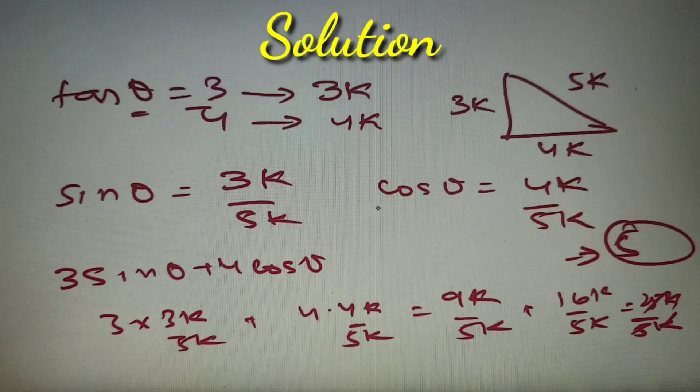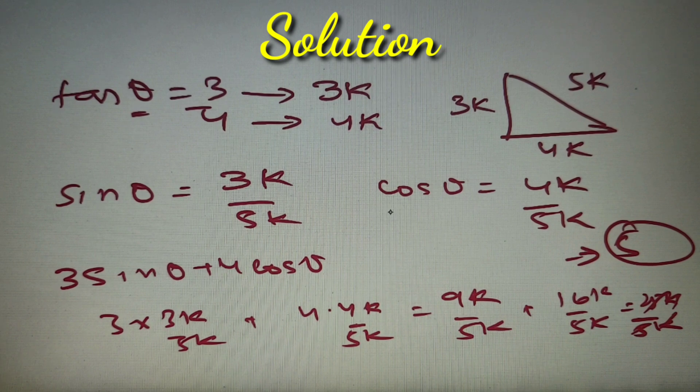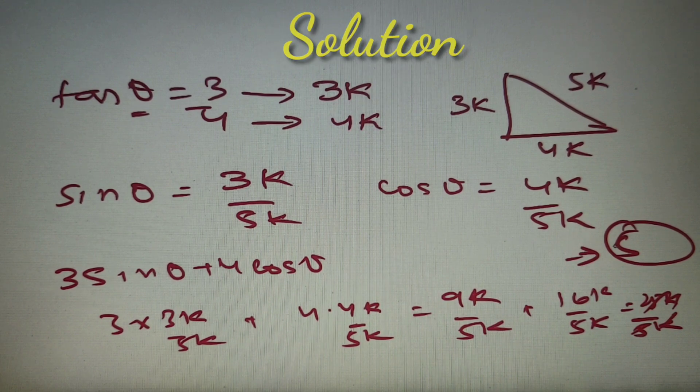So according to our given question, if theta is an acute angle, the maximum value of 3 sin theta plus 4 cos theta is option number B, which is 5.